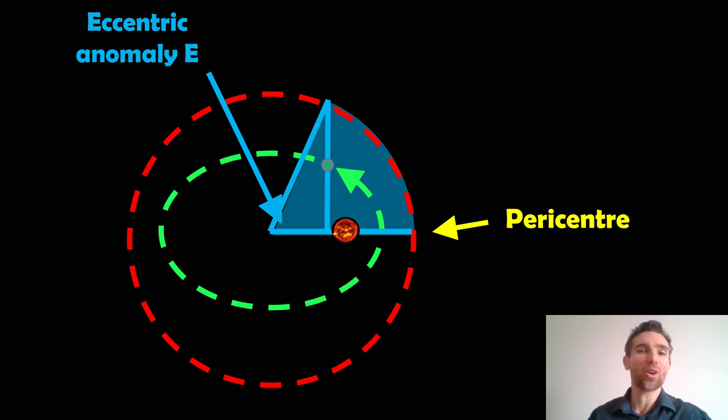I've done a few other videos on lots of other orbital elements, the true anomaly, the mean anomaly, and this time around we're going to have a look at the eccentric anomaly and what that is and how you can calculate it.